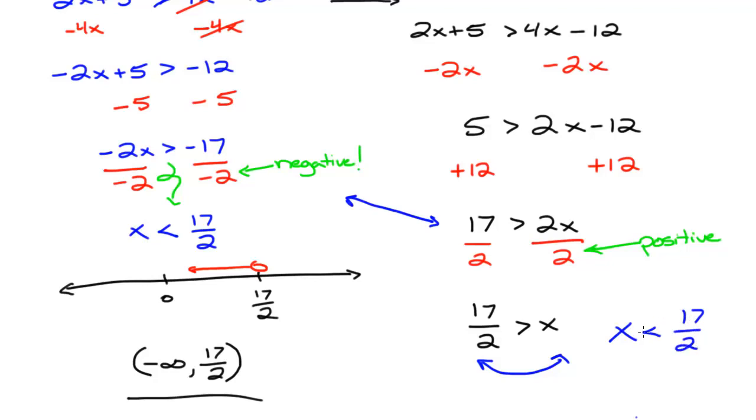Importantly, the small part of the inequality sign is still pointing to the x and the greater than part is still pointing to the 17 halves. And the solution set for this is still the same as it was previously because it's the same inequality.